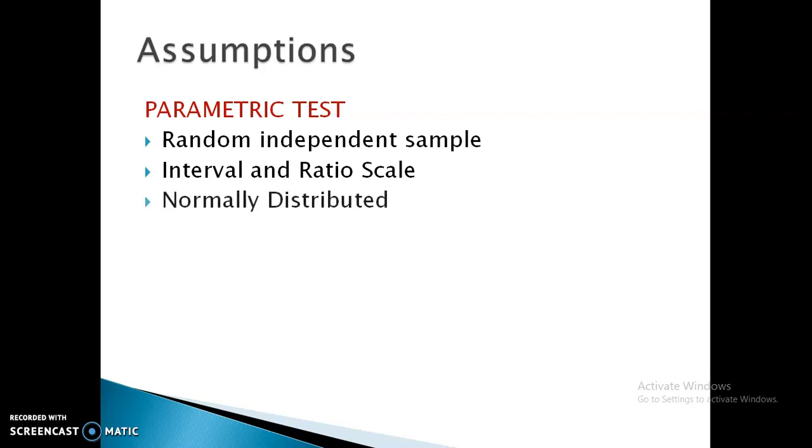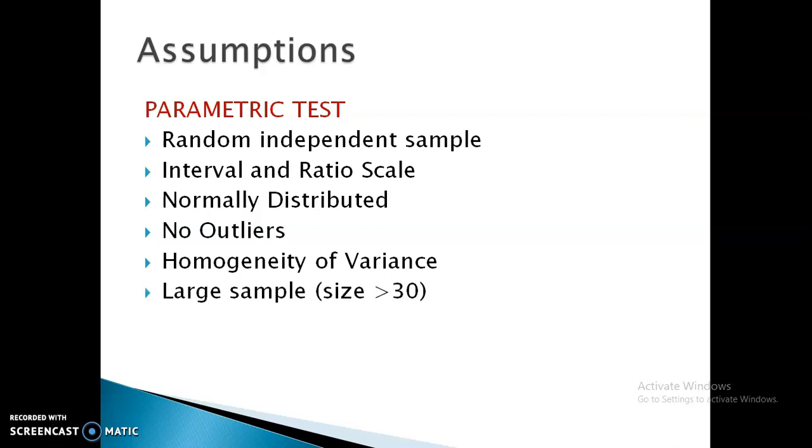There should not be any outlier or an extreme or exceptional case because it will disturb our normal distribution. There has to be homogeneity of variances between different samples. The sample size should be large, at least the size greater than 30.